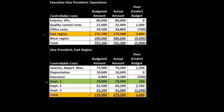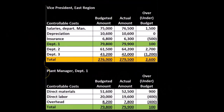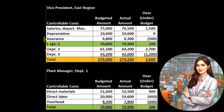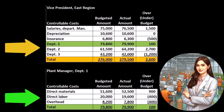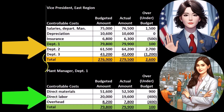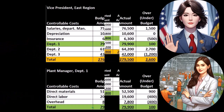If we drill down further into department one, we reach the plant manager level. Here we have the summary information from the vice president of the east region, and then the plant manager report shows the full detail for department one: direct materials, direct labor, and overhead, with totals. So the more detailed report is at the lower level, and it is summarized up at the higher level.